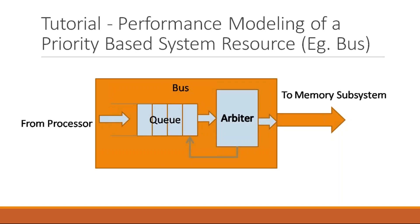I'd like to start off with a basic tutorial: performance modeling of a priority-based system resource. For example, consider a bus architecture. In your bus, you would typically have a queue and an arbiter. Based on the arbitration algorithm and the priority basis on which it is running, the arbiter will take up transactions sitting in the queue and send them out to the slave side, or it could be the other way around as well.